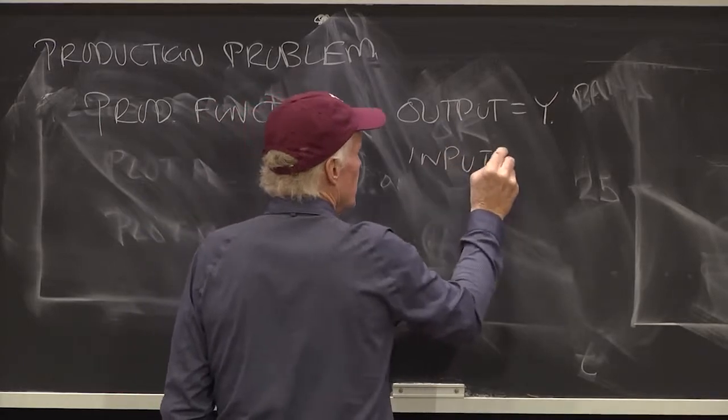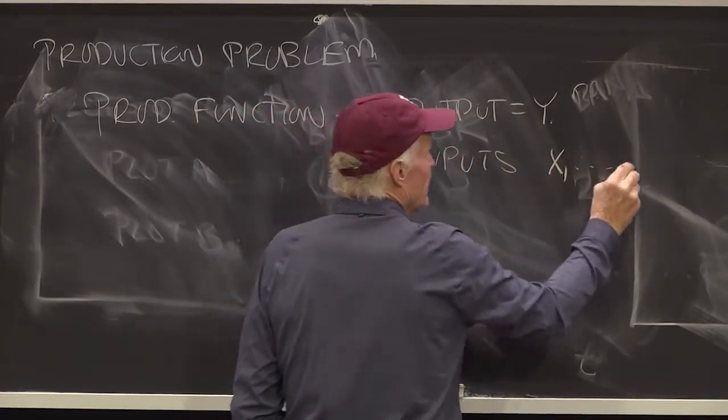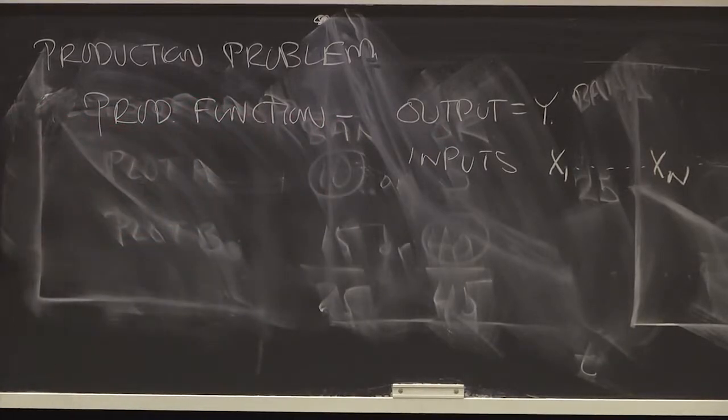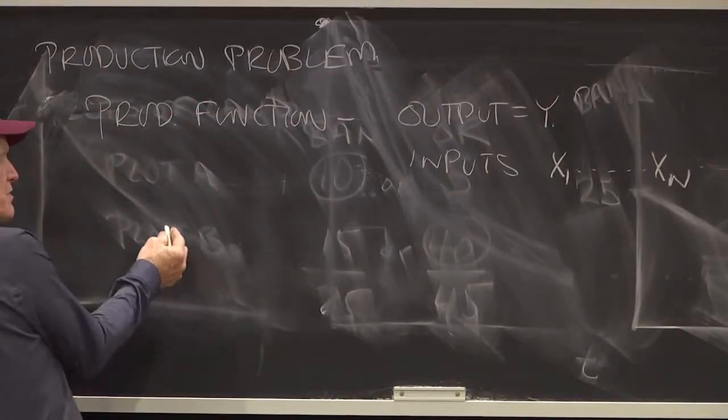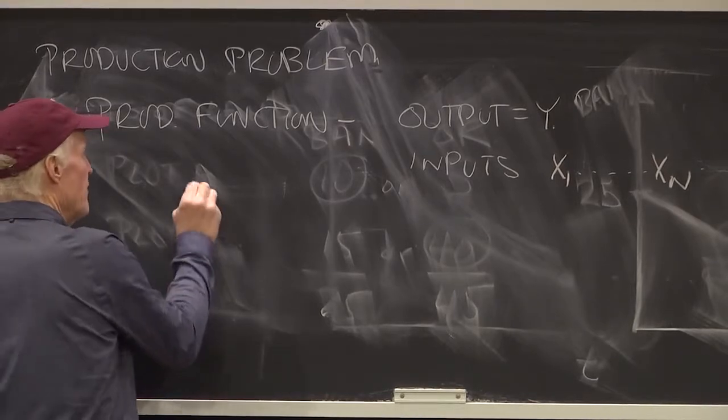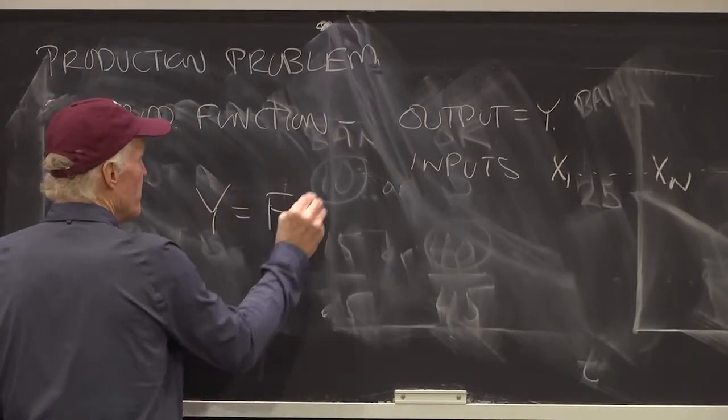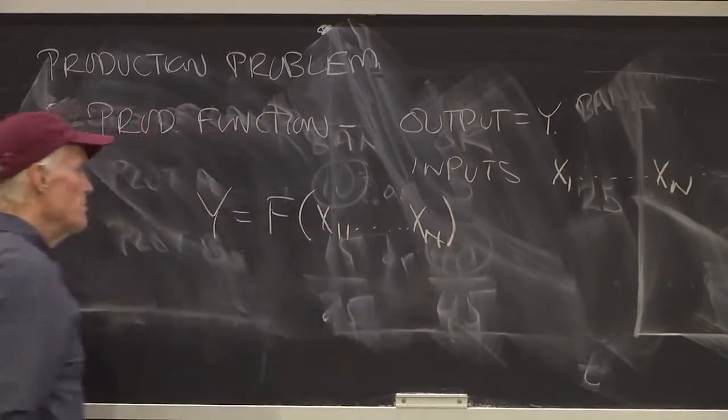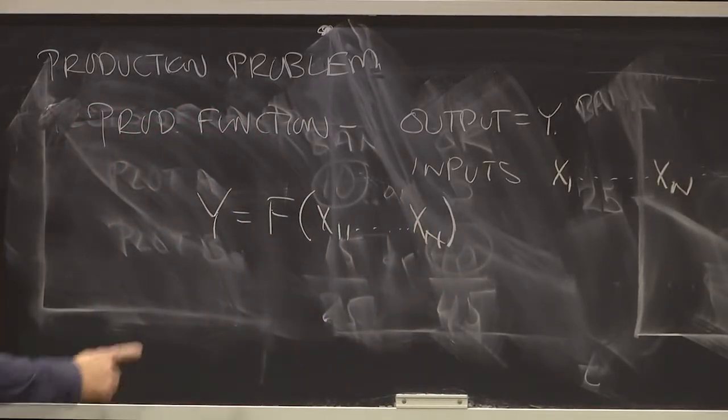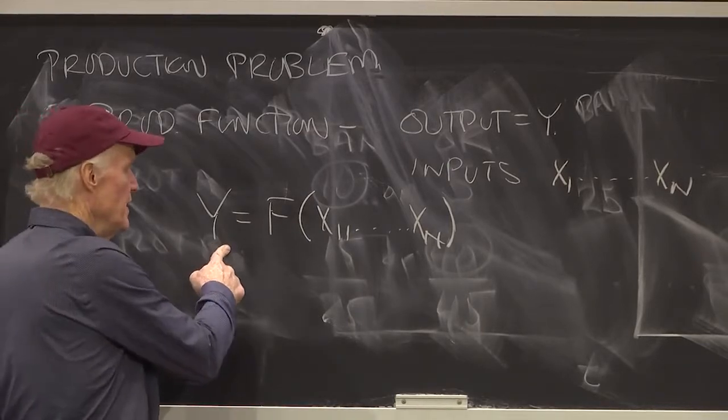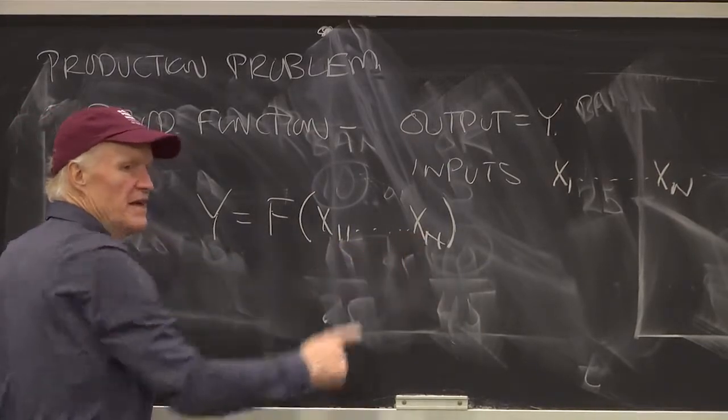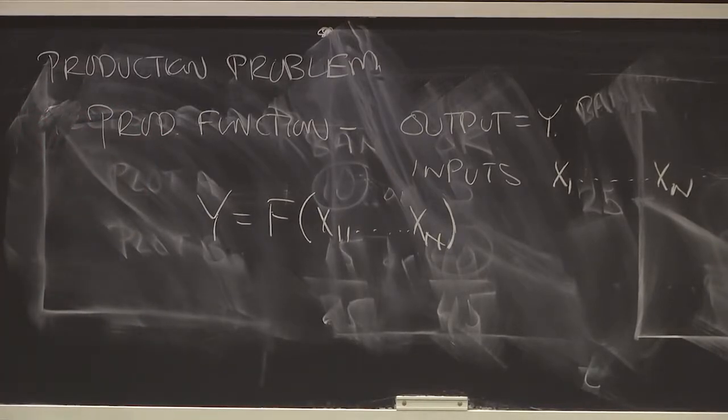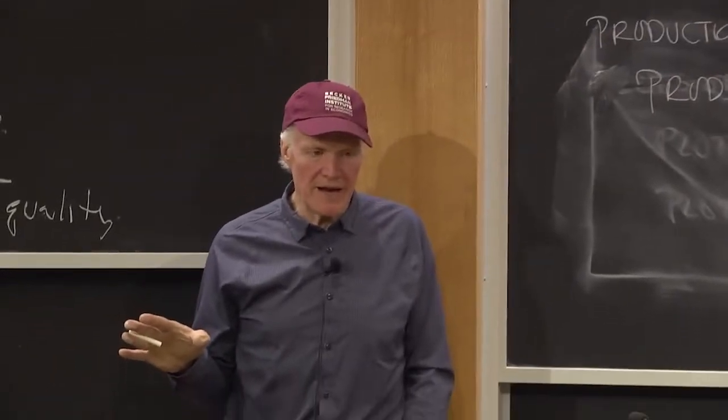Inputs x1 up to xn. So, our inputs are kind of like our goods that we had in our utility maximization problem. And we have y equals f of x1 up to xn. It simply says, one thing I should emphasize that often we don't talk much about in economics,